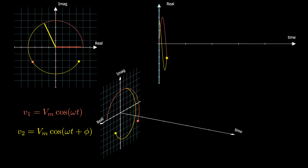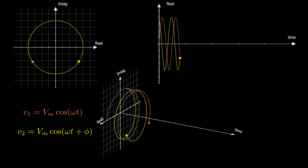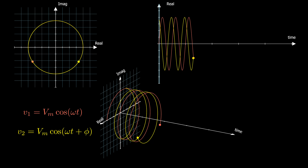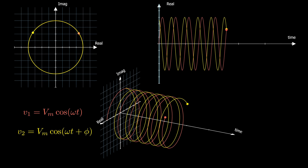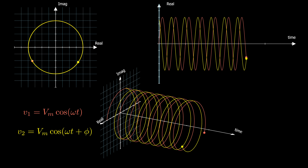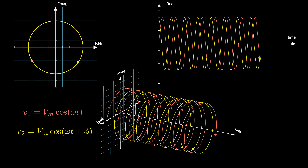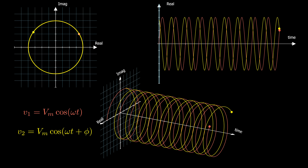Suppose we have two sinusoidal voltage signals: V1 with phi equals zero, while V2 has some amount of phase. We notice that the starting point of V2 occurs first in time; hence we say V2 leads V1 by phi degrees, or V1 lags V2 by phi.